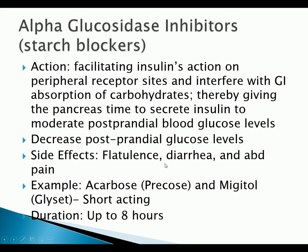Alpha-glucosidase inhibitors, or starch blockers, facilitate insulin's action on peripheral receptor sites and interfere with GI absorption of carbohydrates, giving the pancreas time to secrete insulin to moderate post-prandial blood sugars. They are excellent for someone having trouble controlling post-prandial glucose levels. Side effects include flatulence, diarrhea, and abdominal pain. Examples include Precose and Glyset, with a duration of only up to about eight hours.